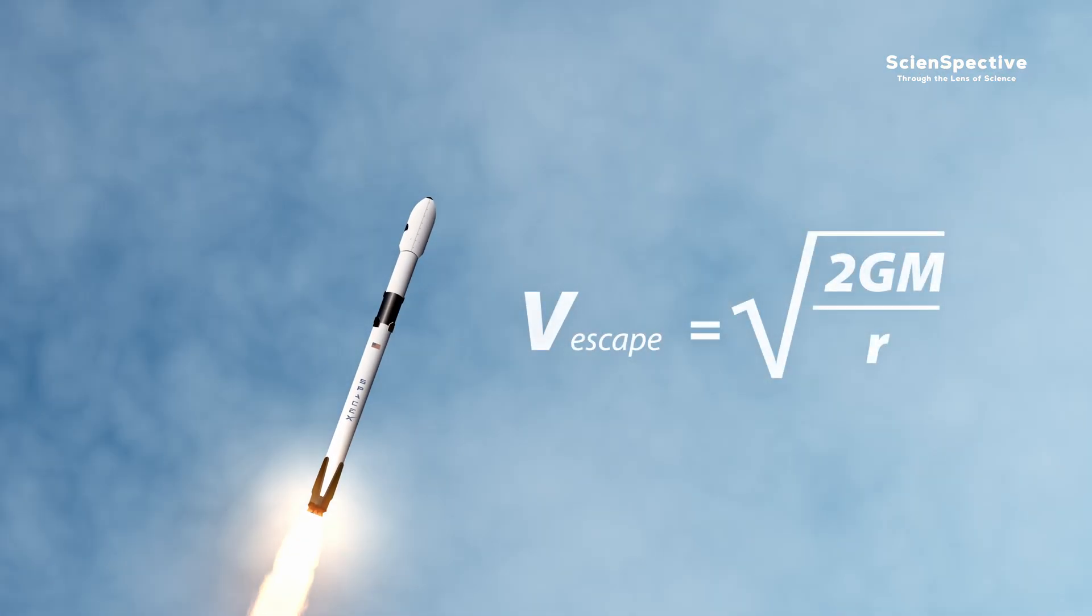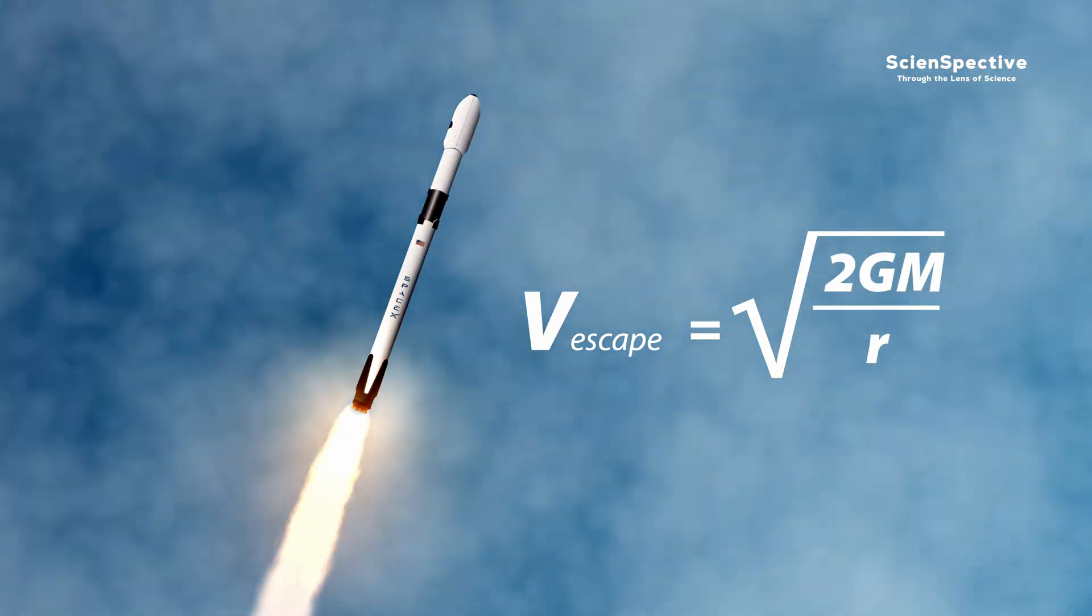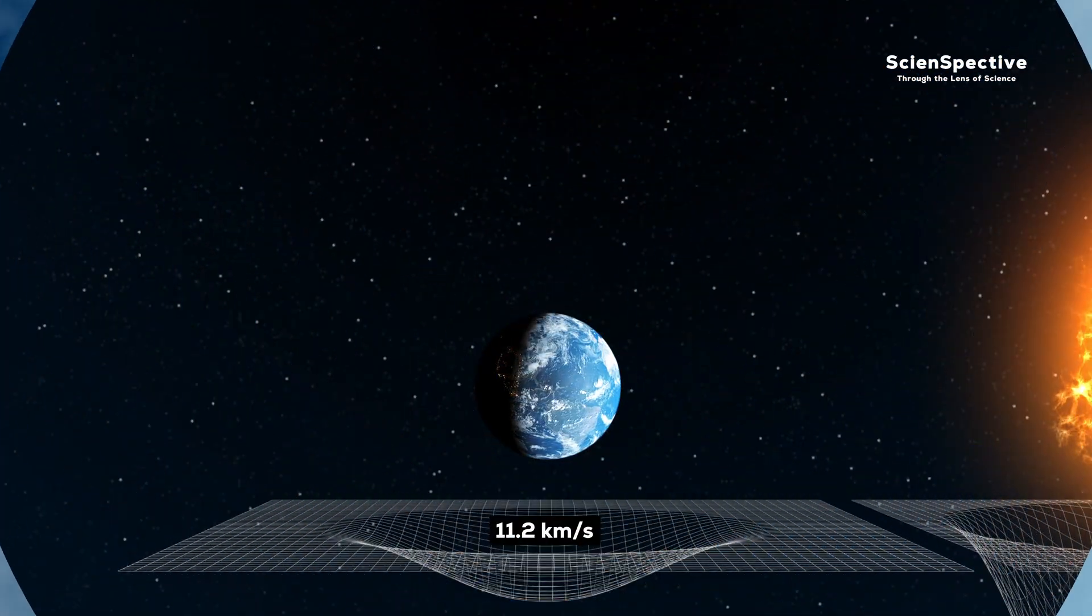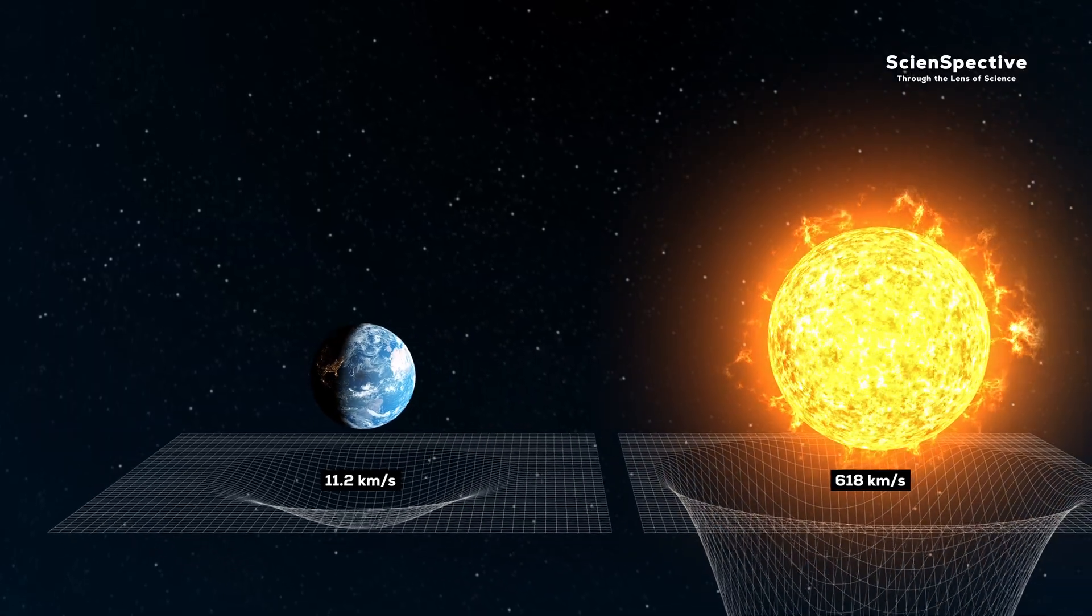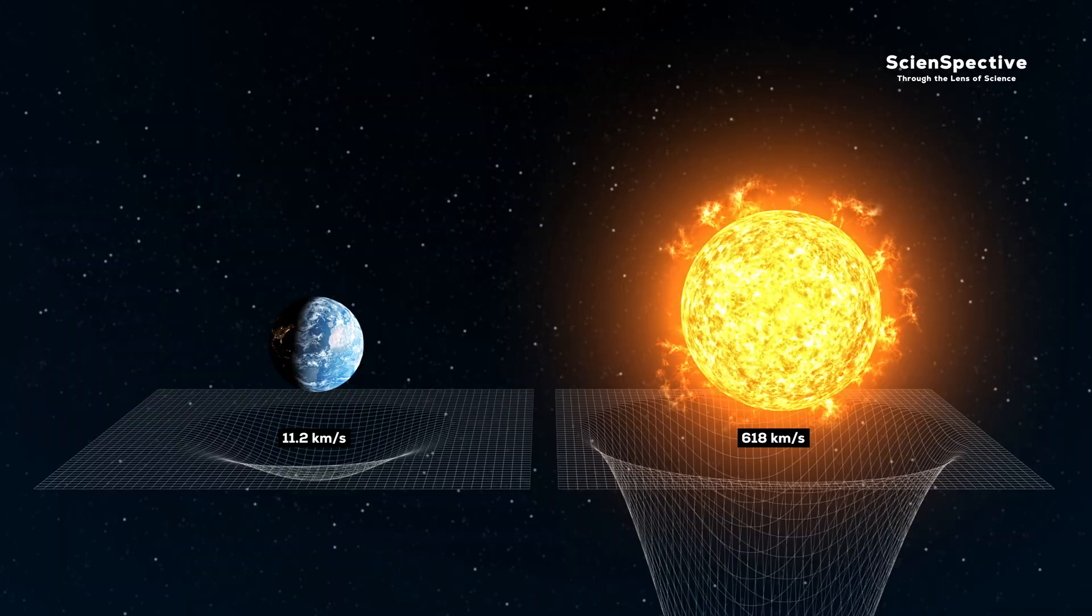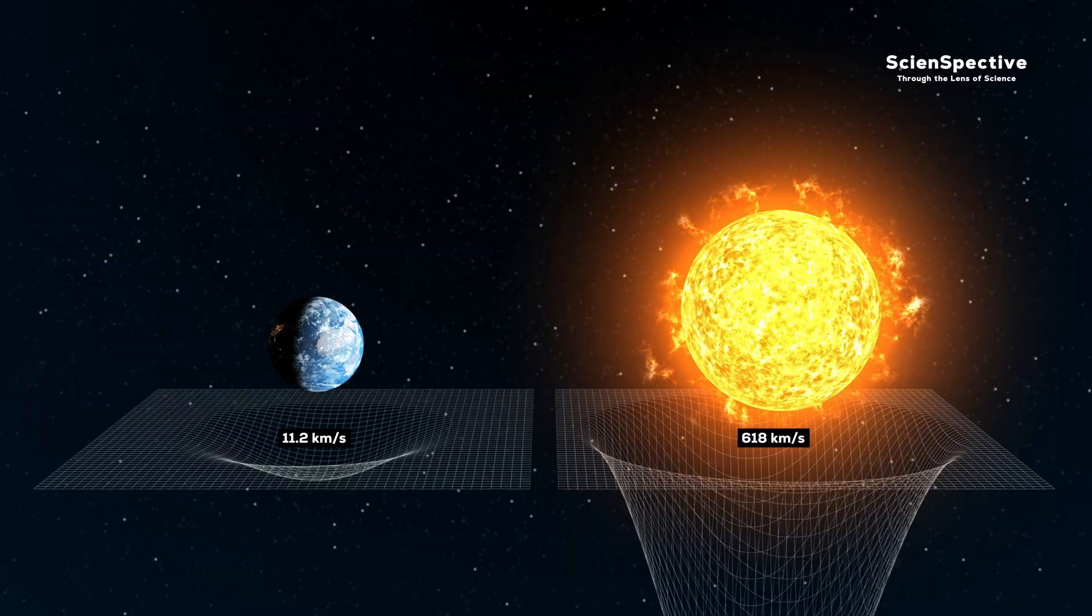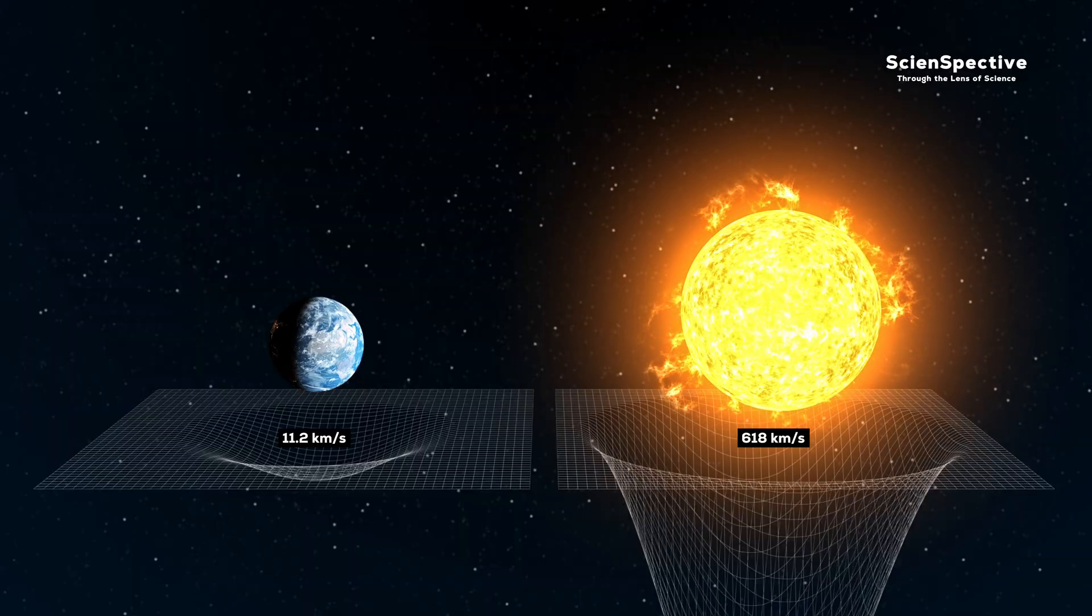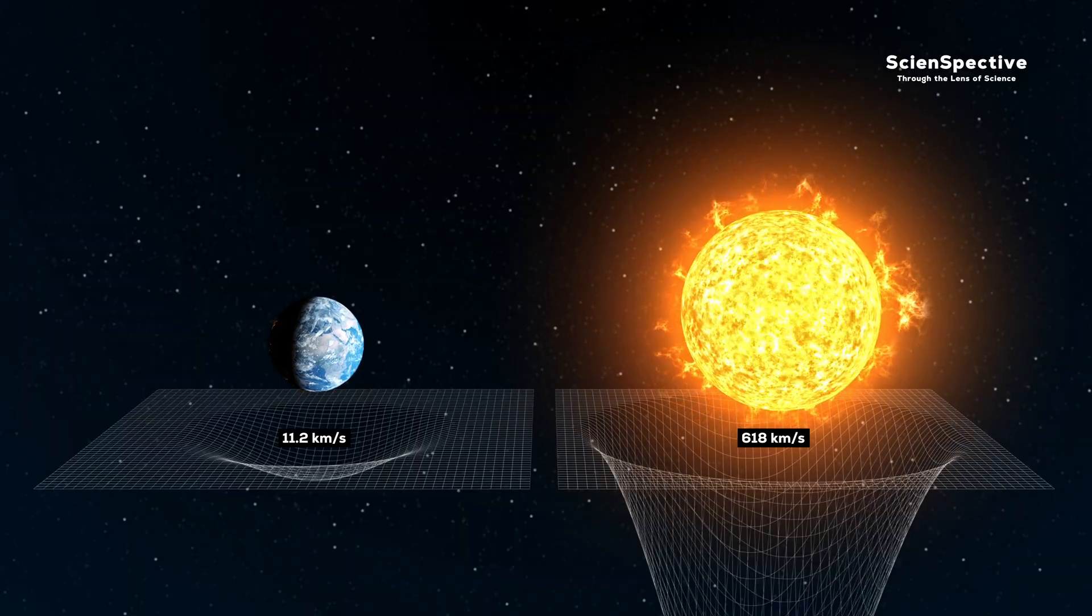So the saying, what goes up must come down, is only true if the speed is less than the escape velocity. On Earth, this escape velocity is 11.2 kilometers per second, while on the much more massive sun, it is 618 kilometers per second. Both values are far below the speed of light, which is 300,000 kilometers per second. So light can easily escape the gravity of Earth or the sun.